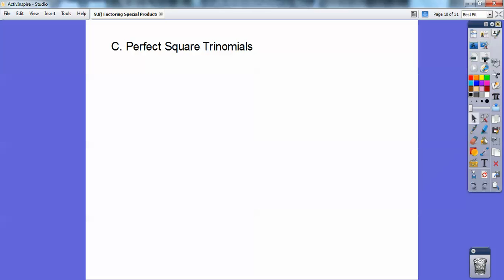Then the next part is perfect square trinomials. Perfect square trinomials follow this pattern. That's a perfect square, that's a perfect square. It always gives me a binomial squared. This sign right here, this plus sign comes from this plus sign right here.